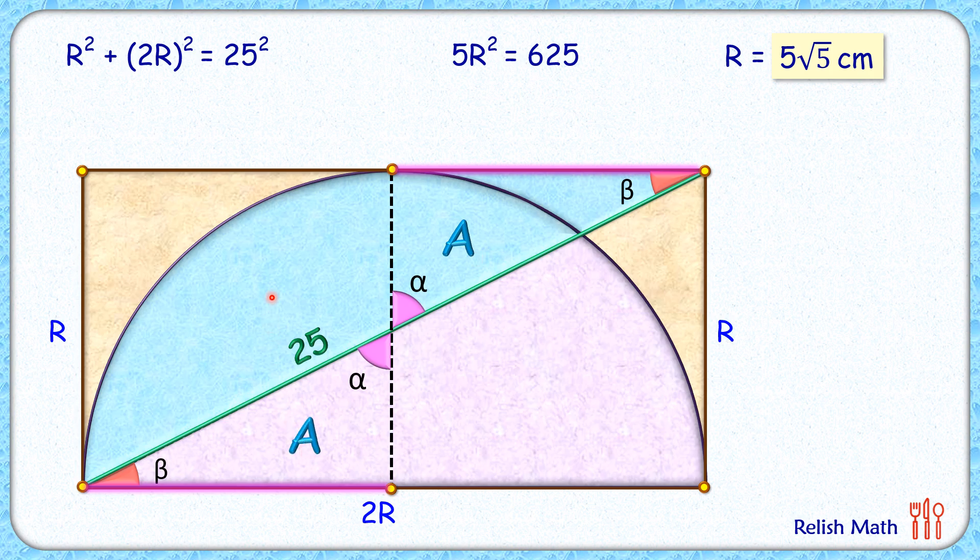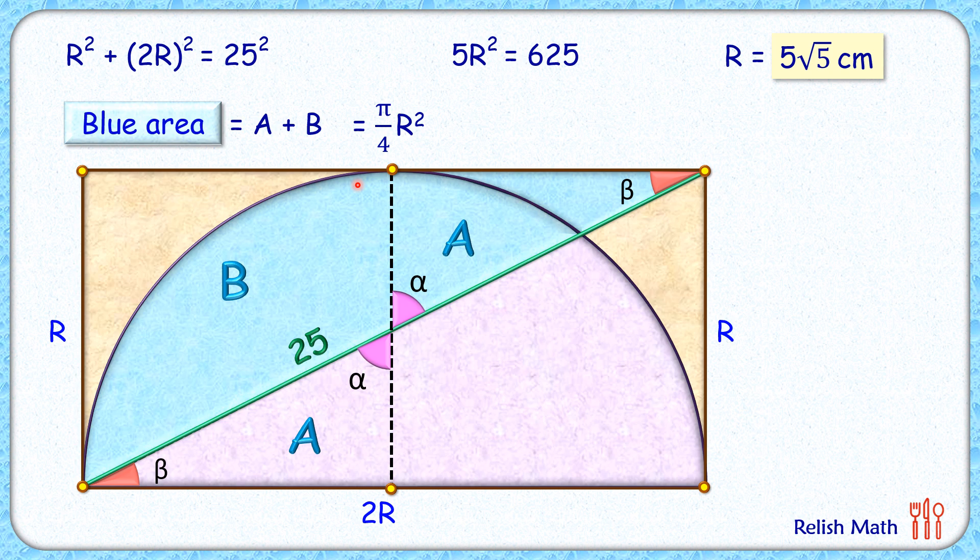Let's assume this blue region's area is B cm². Total blue area will be A + B cm². But instead of this A, if we take this A, we can see that A + B is nothing but the area of this quadrant. For this quadrant, the radius is 5√5 cm, and r² = 125. Simplifying, we get blue area as 31.25π, which in decimal is about 98.17 cm².